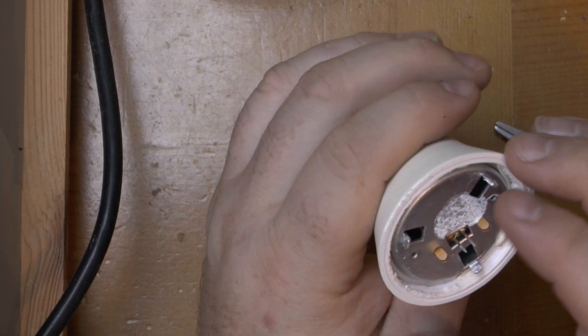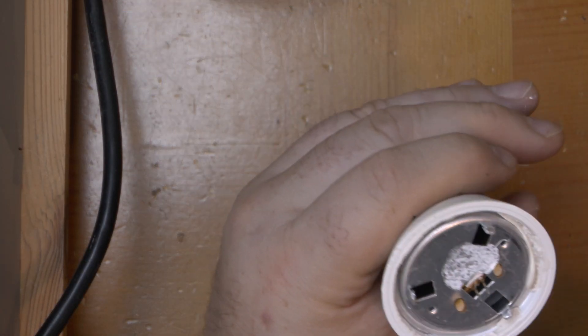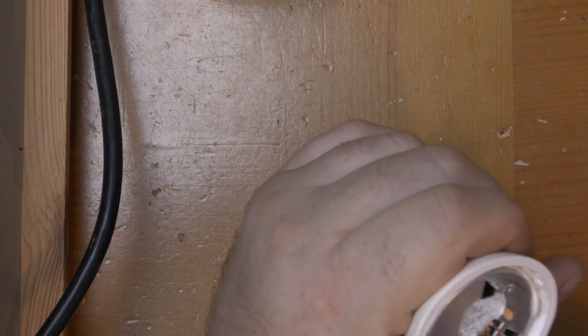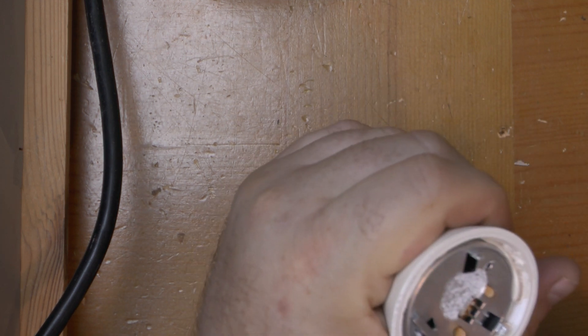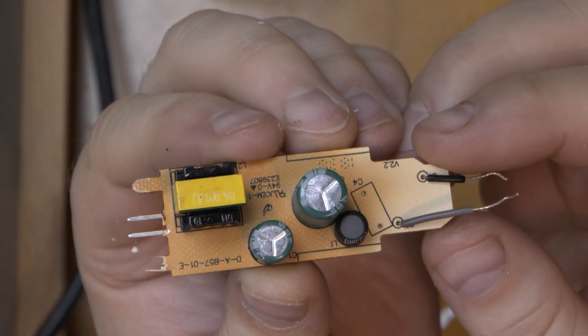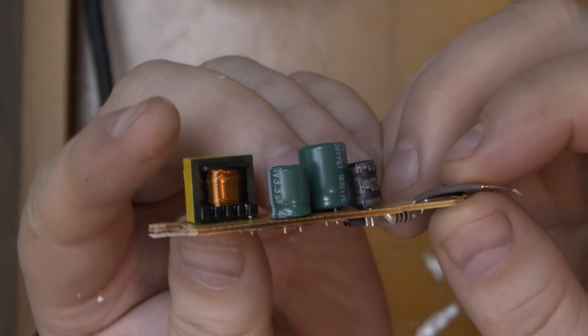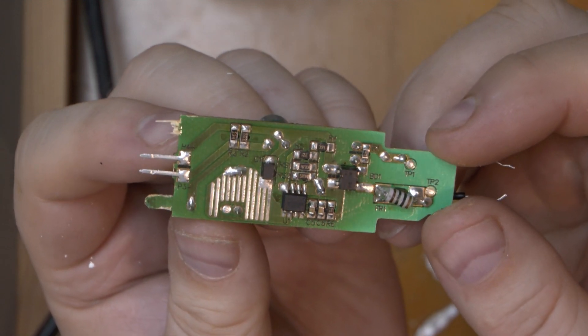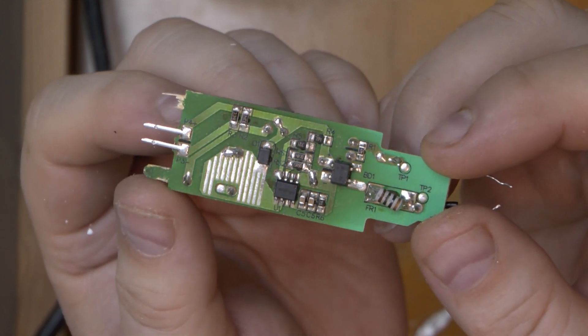Further down then we have this metal base. Let's see if we can pry this out. I think I need my tin opener to open this thing. And that's the board. Let's trace it out.